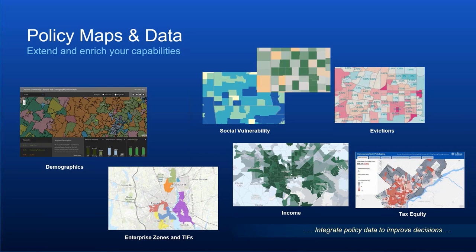We can visualize our data, detect outliers, enrich our data with external datasets, visualize and manage in 3D, and look at change detection. An area that might be new to you — though it's been around at Esri for a while — is Policy Maps. Policy Maps are more than just maps; it's data you can incorporate into your analysis and reporting. With the census just completed, detailed information will be available soon. Some current challenges include the University of Chicago study on racial inequity in taxation — there's a lot more analysis to be done on the true impact of fair market value, TIFs, and enterprise zones on equitable taxation.